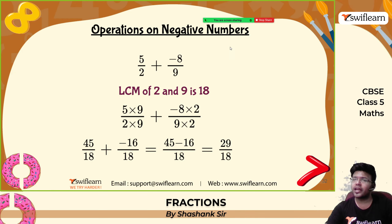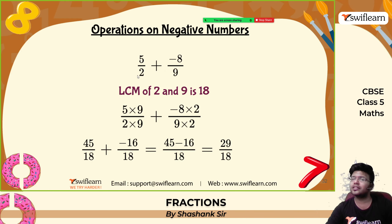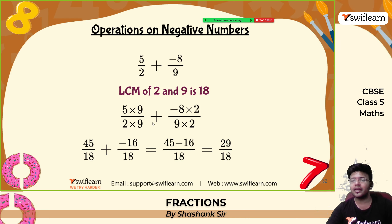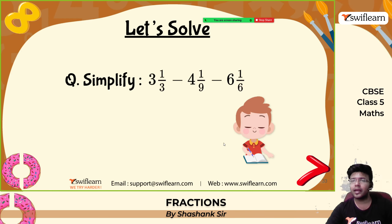Operations on negative numbers: 5 by 2 plus negative 8 by 9. LCM of 2 and 9 is 18. This gives 45 by 18 minus 16 by 18. Plus into minus is minus. 45 minus 16 is 29. So the answer is 29 by 18.